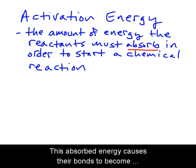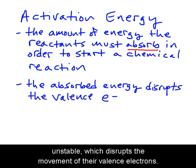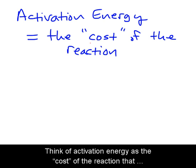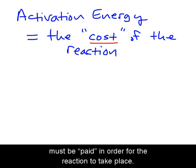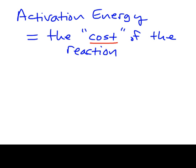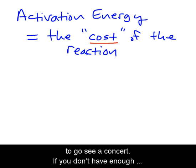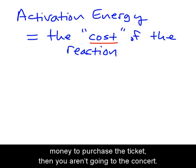This absorbed energy causes their bonds to become unstable, which disrupts the movement of their valence electrons. Think of activation energy as the cost of the reaction that must be paid in order for the reaction to take place. It's like the price of a ticket that you have to pay in order to go see a concert — if you don't have enough money to purchase the ticket, then you aren't going to the concert.